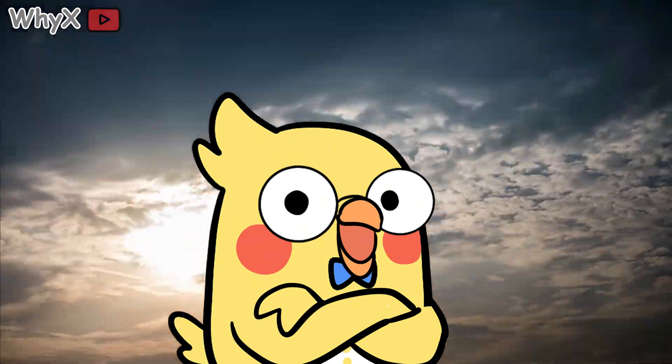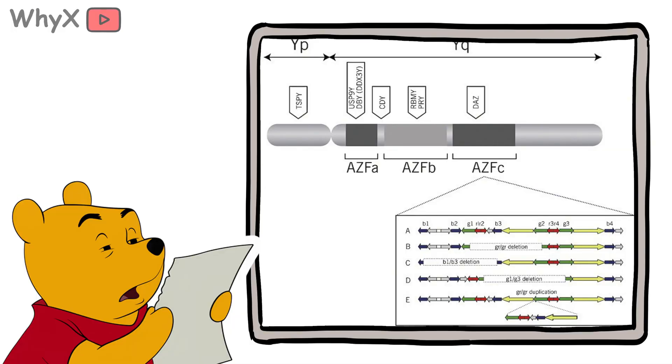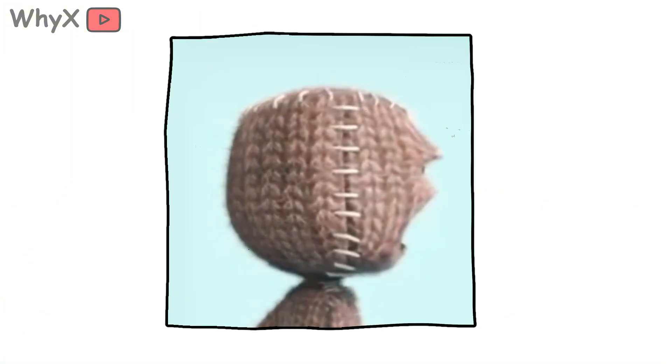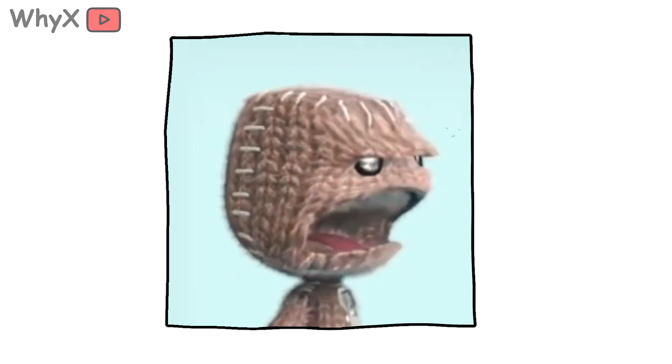Now, with long-read sequencing tech, the picture is complete. And that matters: those missing regions include genes related to immunity, fertility, and disease. In other words, the final chapters of our instruction manual were only recently revealed.